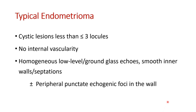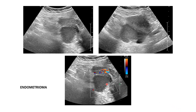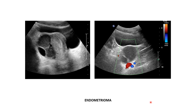A typical endometrioma has less than three loculations and no vascularity inside. The content displays homogeneous low-level echoes or ground-glass echogenicities, and the wall's septations are smooth. The wall may contain echogenic foci attributed to cholesterol deposits or fibrin particles. This is a typical endometrioma with homogeneous low-level echoes inside and no vascularity. Another example shows two components in ground-glass echogenicity — typical endometrioma components.